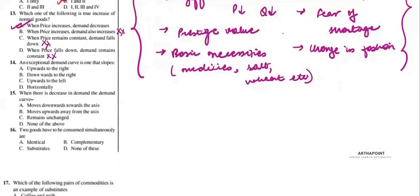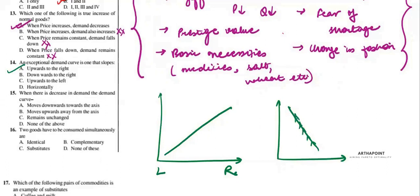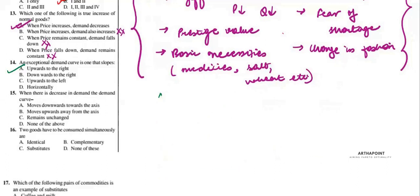Question 14: an exceptional demand curve is one that slopes upwards from left to right. If a curve slopes upwards towards the left, it is actually sloping downwards towards the right — that is not exceptional. So an exceptional demand curve slopes upward to the right.